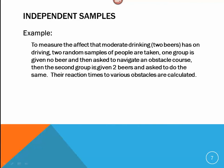So, let's take a look at a more exact rendering of this so we can get an idea of what we're talking about in independent samples. So, in this example, we want to measure the effects that moderate drinking two beers has on driving. So, we take two different random samples of people. One group is given no beer and then asked to navigate an obstacle course. And the second group is given two beers and asked to do the same. And then their reaction times to various obstacles are measured.